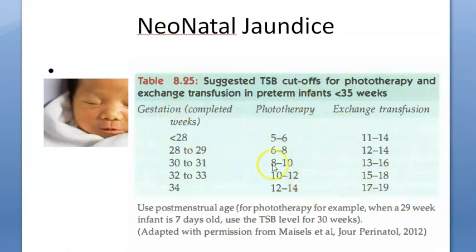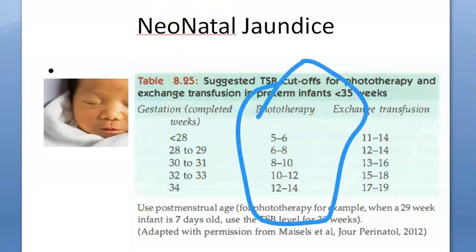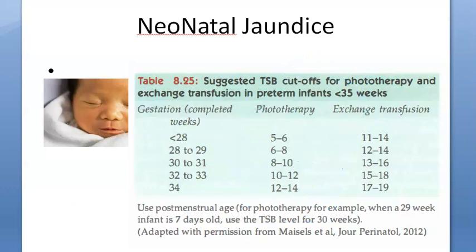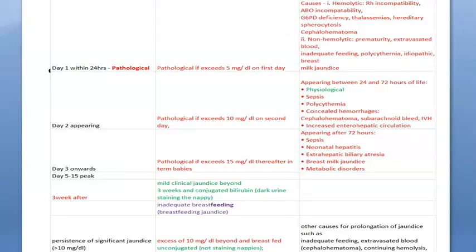Looking at this chart, the middle line is for phototherapy: 15, 14, 12, 10, 8, 6 milligrams per deciliter based on gestational age — 34 weeks, 33 weeks, 31 weeks, 28 weeks. For less than 28 weeks, even if bilirubin is 5 they want to give phototherapy.